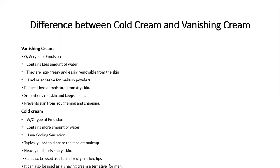Comparing cold cream and vanishing cream: Vanishing cream is an oil-in-water type of emulsion containing more water. It is non-greasy, easily removed from skin, used as an adhesive for makeup powders, reduces moisture loss from dry skin, smoothens the skin, and prevents roughening and chapping. Cold cream is a water-in-oil type of emulsion containing less water compared to vanishing cream. It provides a cooling sensation, is typically used to cleanse the face of makeup, heavily moisturizes dry skin, can be used as a balm for dry cracked lips, and can also be used as a shaving cream alternative for men.